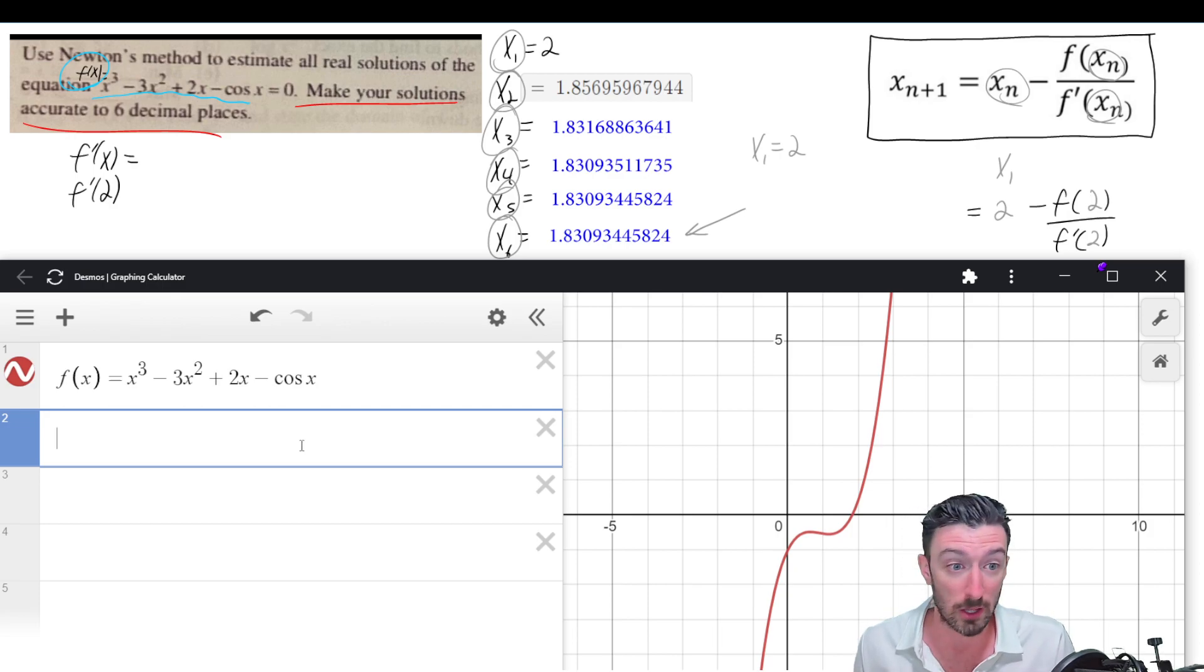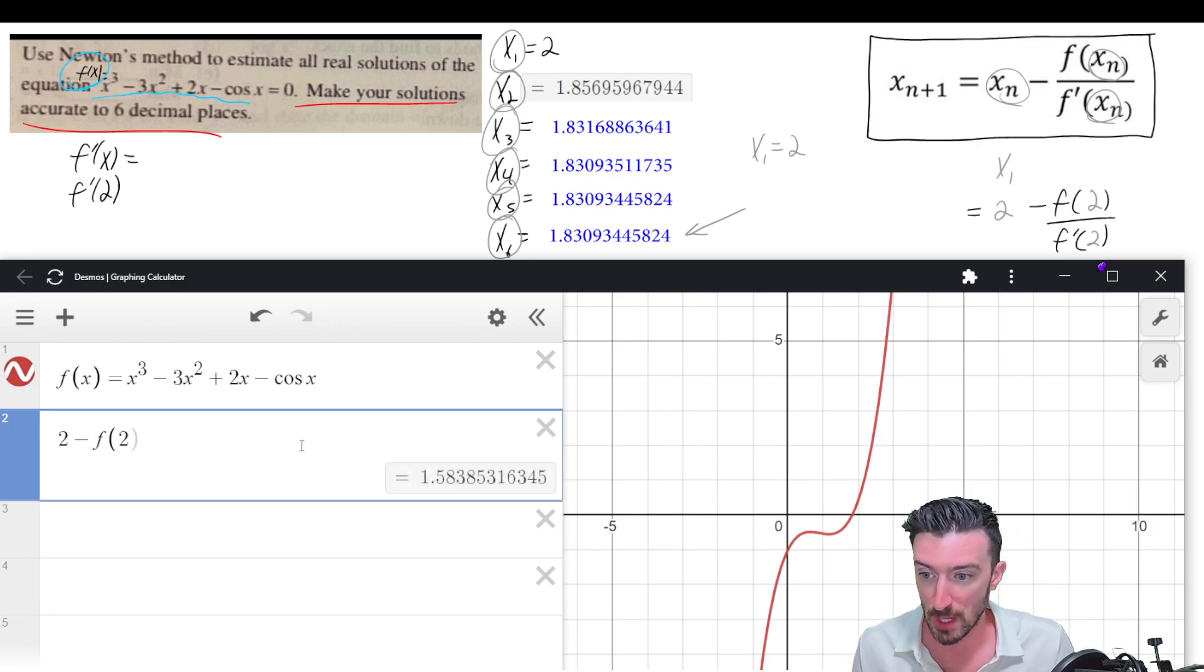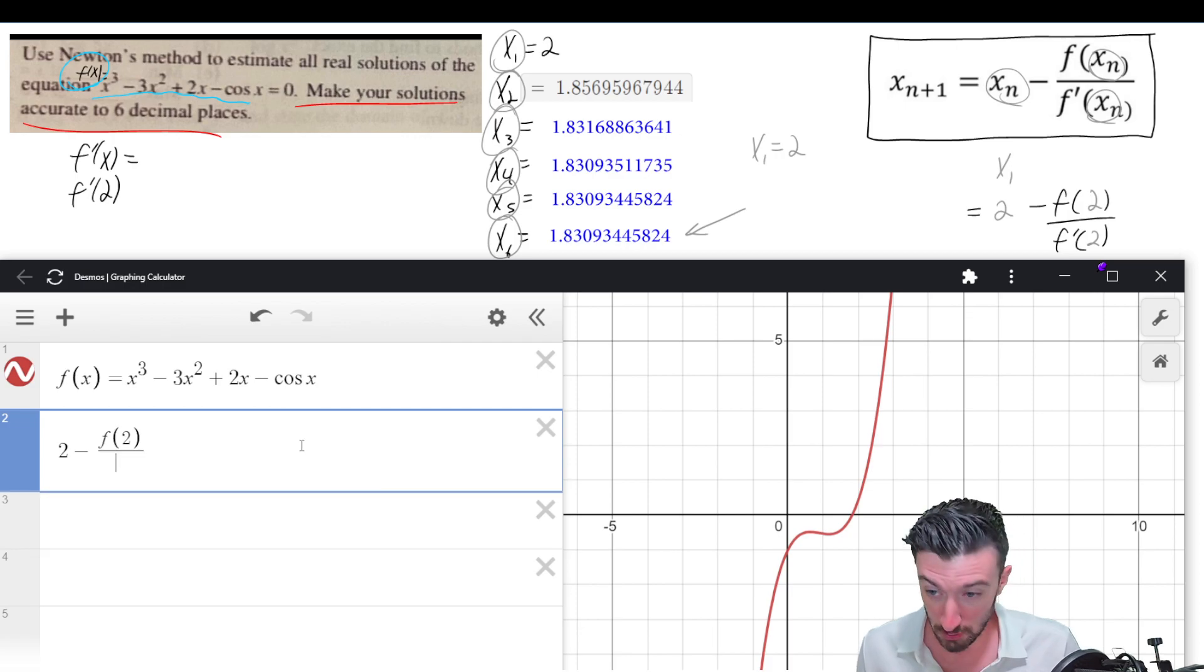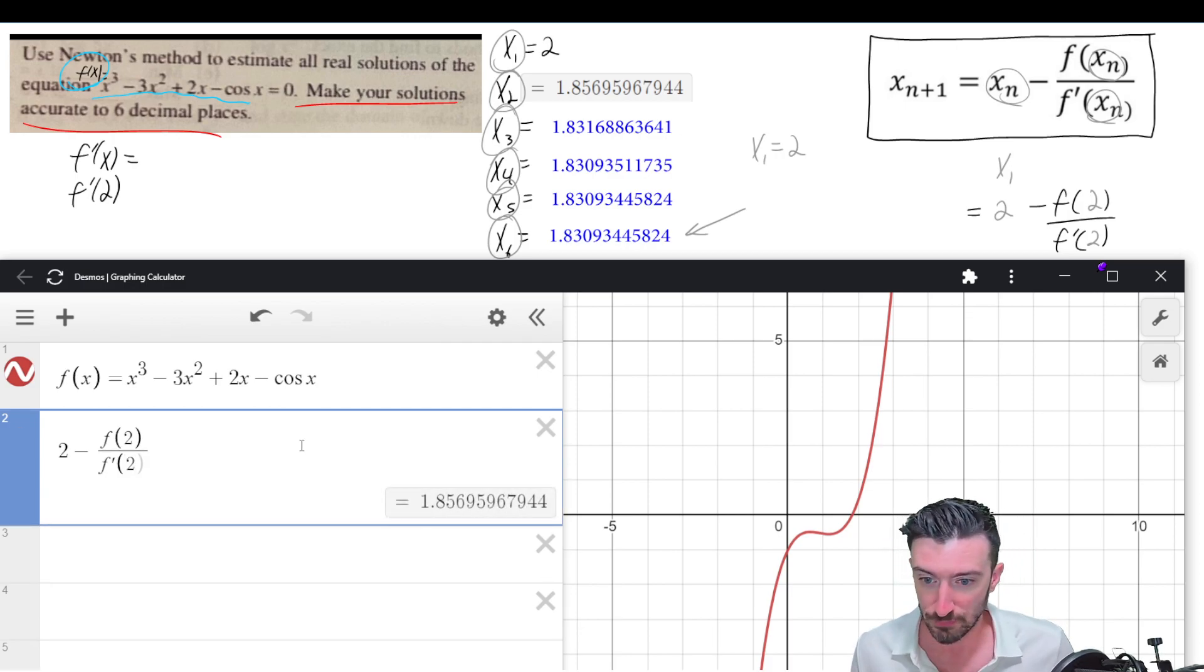So let's start with two, this might actually help the AI wipe us out, but anyway, two minus f(2) over f'(2). Okay, so that's how I arrived at my second guess.